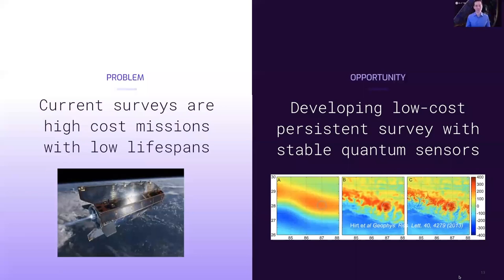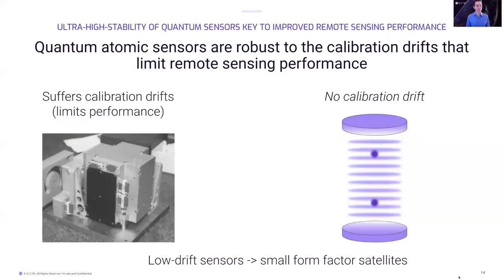Unfortunately, these surveys require high-cost satellite missions planned over decadal timescales yet only lasting a few years. The European Space Agency's GOCE gravity survey mission cost 350 million euros and lasted just four and a half years. The improved measurement precision enabled by quantum atomic sensors presents an opportunity to reduce the overall size of the sensor payload, enabling persistent surveillance with lower-cost smaller satellites. Quantum sensors could also improve both the spatial and temporal resolution of these surveys — allowing monitoring of smaller river basins, detection of weaker earthquakes, or even remote mineral prospecting from space.